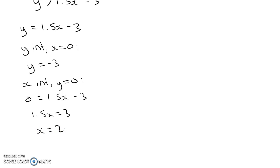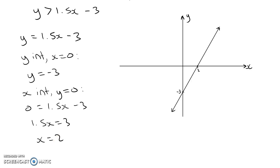So we've got our two intercepts and we can go ahead and sketch that line. We've sketched the line y equals 1.5x minus 3.